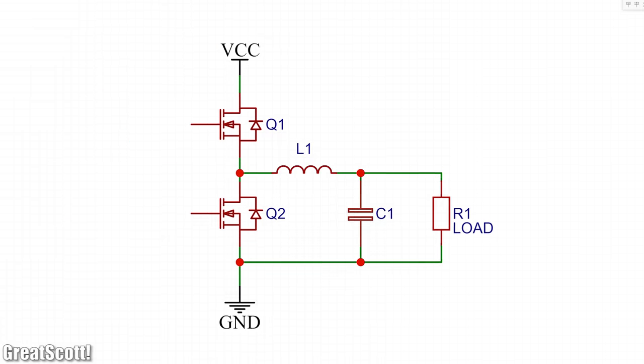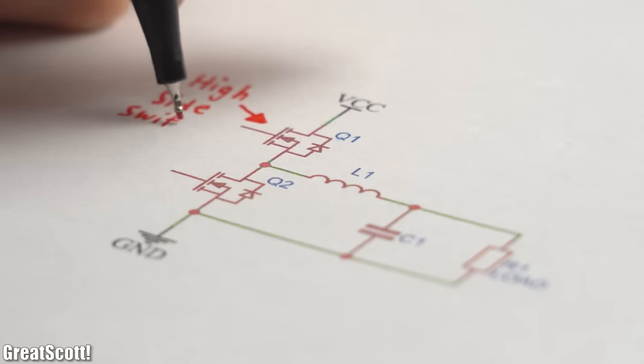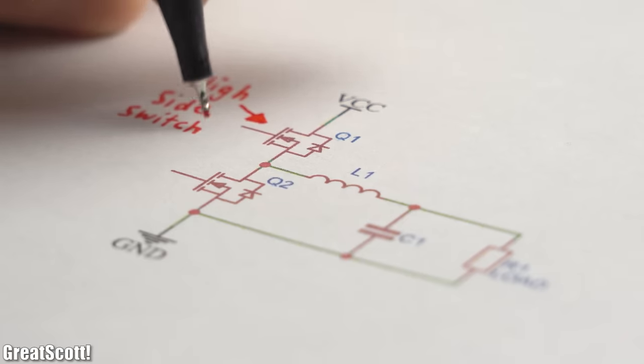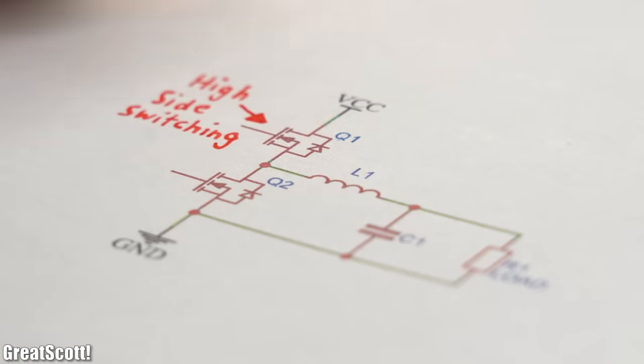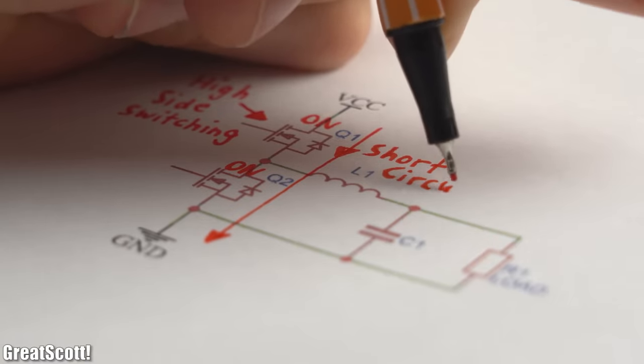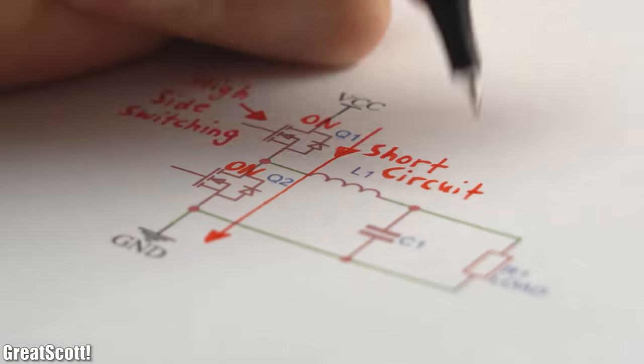So all in all a pretty good concept. But how can we easily turn on and off the two MOSFETs alternating, considering that we are dealing with high side switching and the MOSFETs are also never allowed to turn on at the same time?